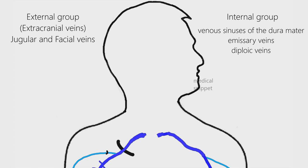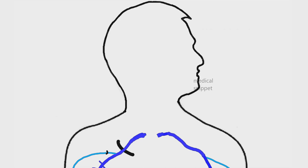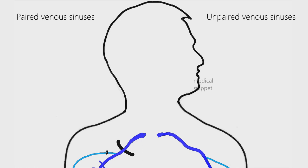Emissary veins are valveless venous channels that connect the venous sinuses of the dura mater to the extracranial venous systems. Diploic veins are intraosseous venous channels present in the cancellous bone of the skull. The venous sinuses of the dura mater can be classified into paired and unpaired groups.